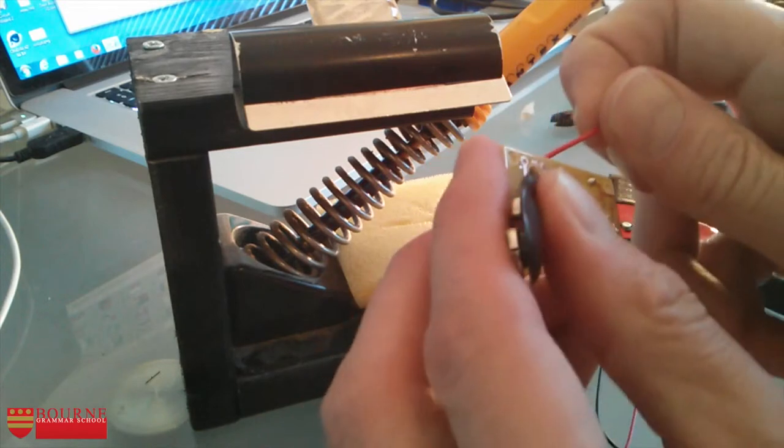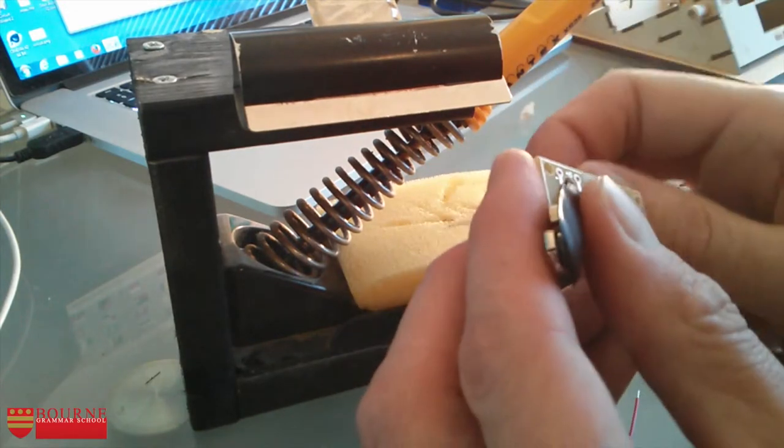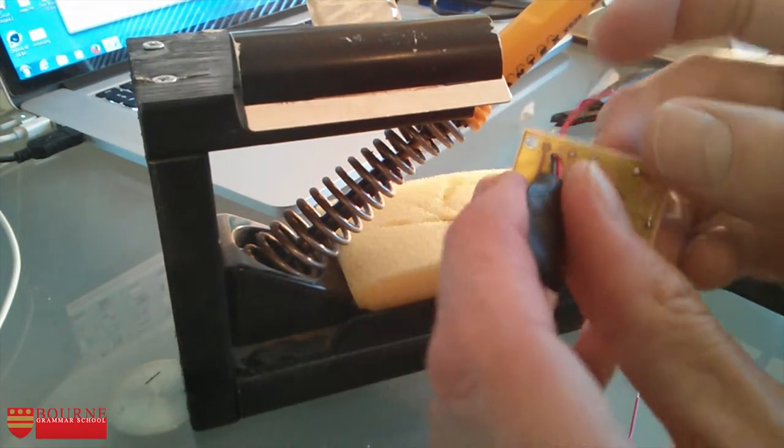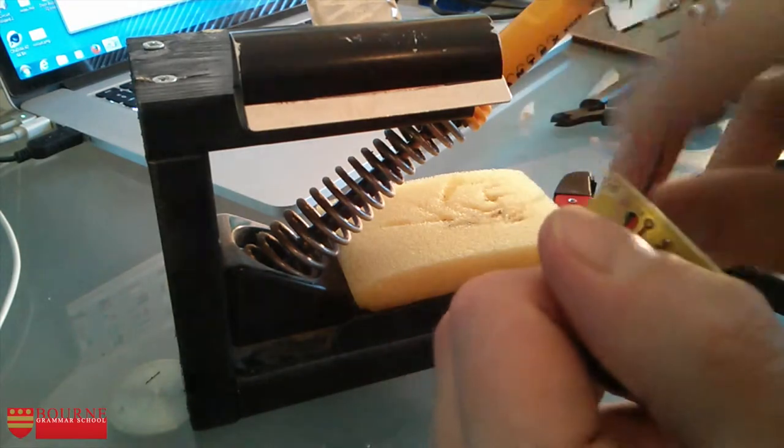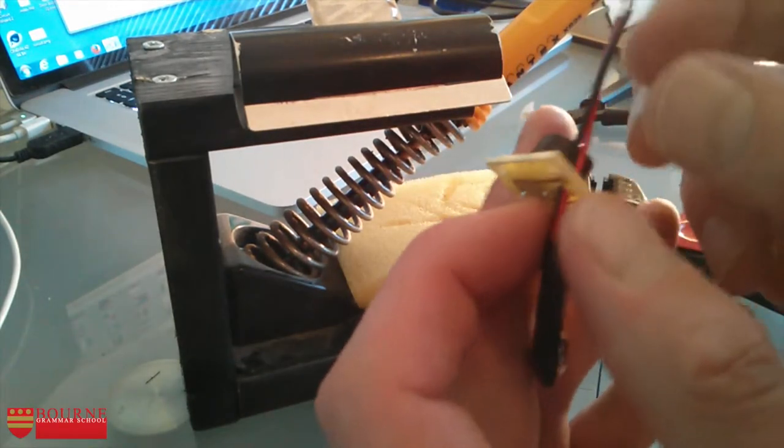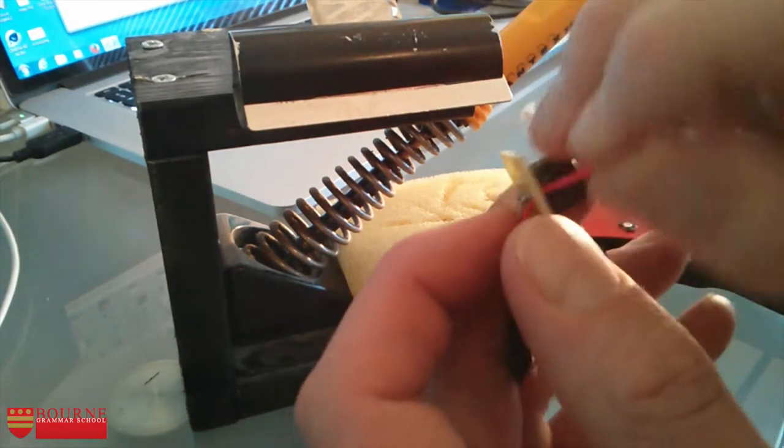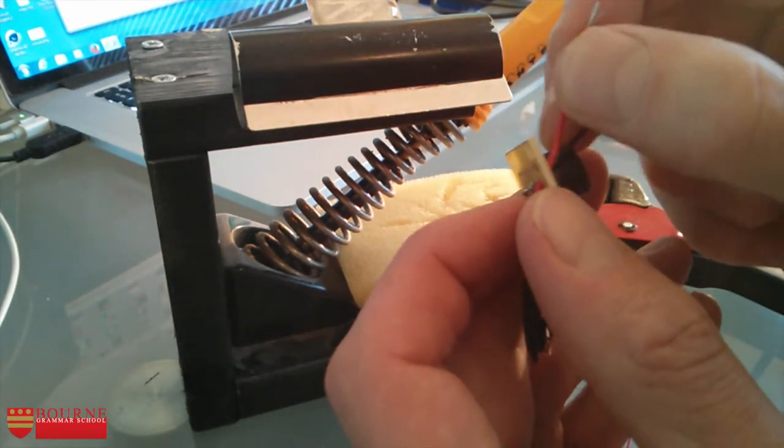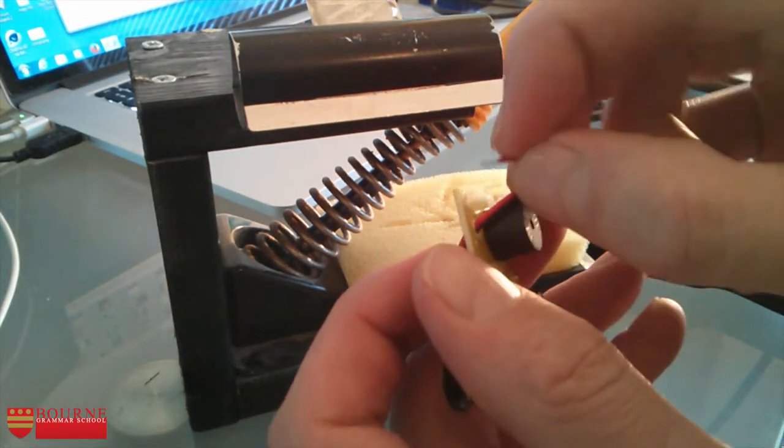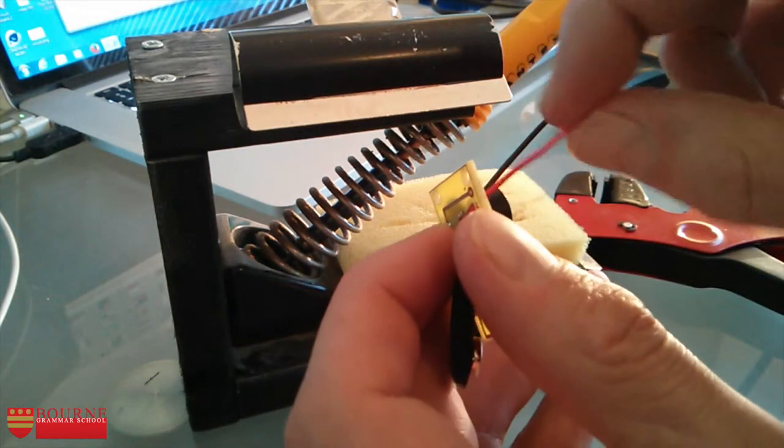You might notice that as I'm doing this, I frayed the ends of my multicore a little bit. That's liable to happen quite a lot with multicore wire. It's quite fiddly to deal with and the ends fray quite a lot.